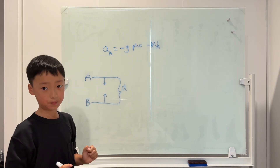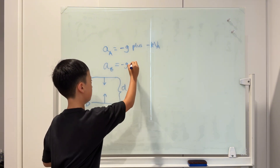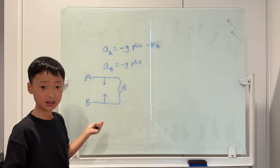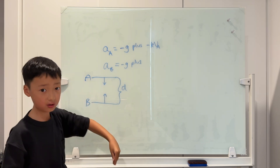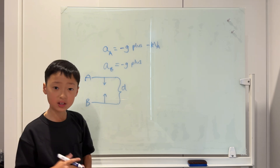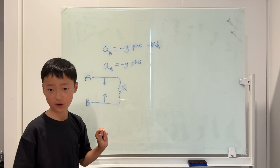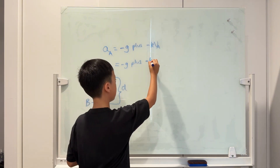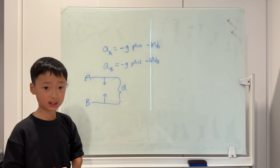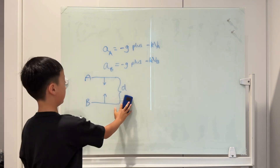Now for B: the acceleration part is always negative G. Since B is heading up, the resistance must be heading down, so KV has to be negative. K is greater than zero and VB is also greater than zero, but it needs to be negative, so we put a negative in front, giving acceleration of B as negative G minus KVB. For the rest of this question I'll just focus on A, since B uses a similar method. This halves the explanation time.